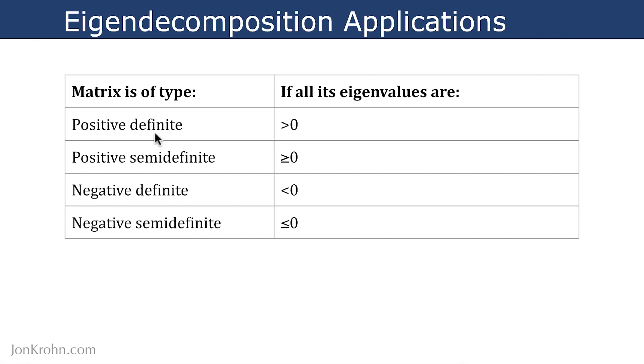And so we have these four types of matrices: positive definite, which is a kind of matrix that has all eigenvalues being greater than 0. We have the positive semi-definite type where all of the eigenvalues are greater than or equal to 0. Negative definite where all of the eigenvalues are less than 0. And negative semi-definite where they are less than or equal to 0.